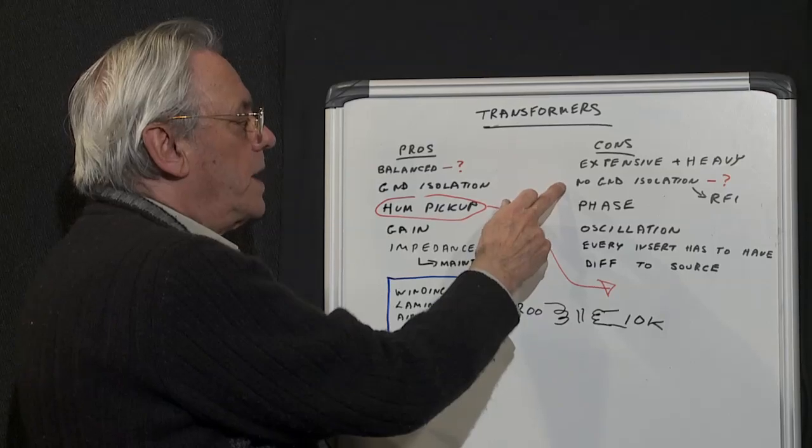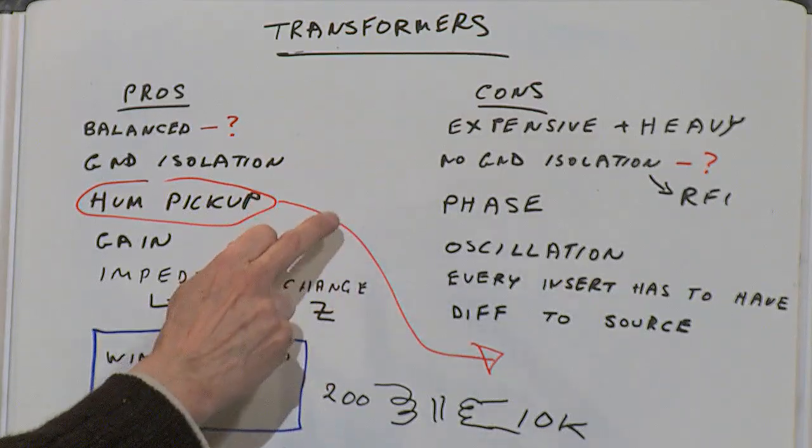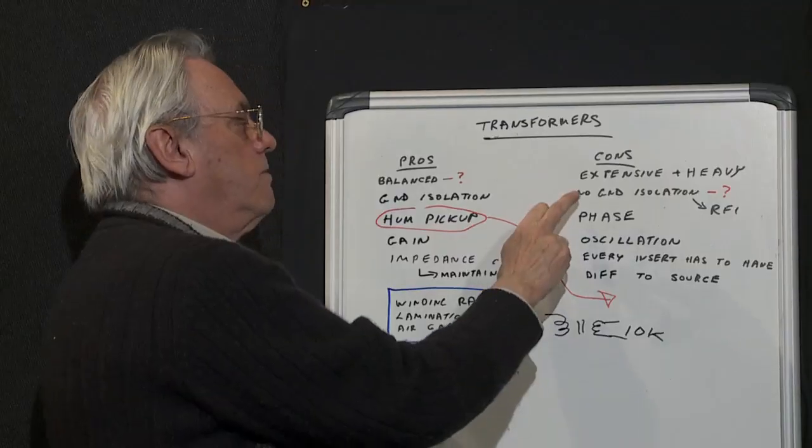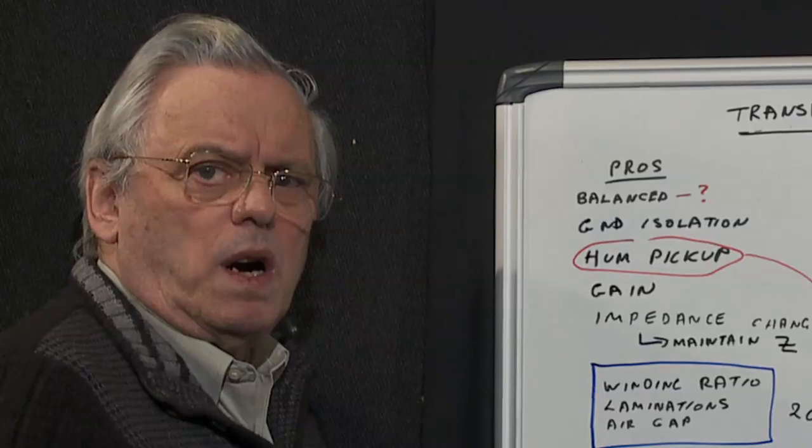Another disadvantage is without a transformer you get no ground isolation because the signals are balanced, no ground isolation.